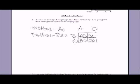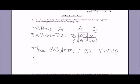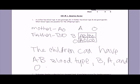So then by the Punnett square we see that the children can have blood type A, blood type B, A, and O.